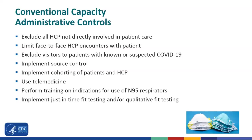Administrative controls within conventional capacity include excluding healthcare personnel not directly involved in patient care, limiting face-to-face encounters by bundling care activities, excluding visitors to patients with known or suspected COVID-19, implementing source control such as having patients wear a face mask during transfer, implementing cohorting of patients and healthcare personnel or the use of telemedicine, training healthcare personnel on indications for N95 respirator use to minimize waste, and implementing just-in-time fit testing including qualitative fit testing.